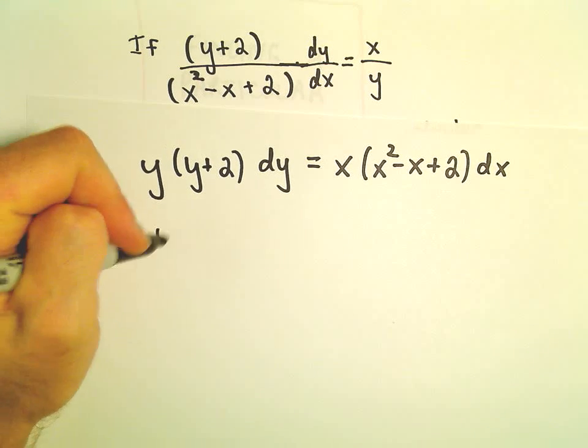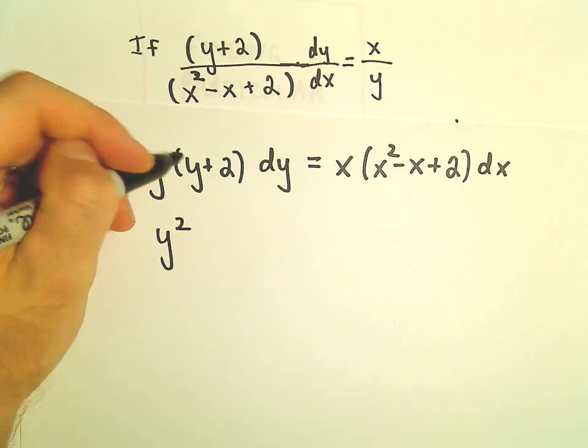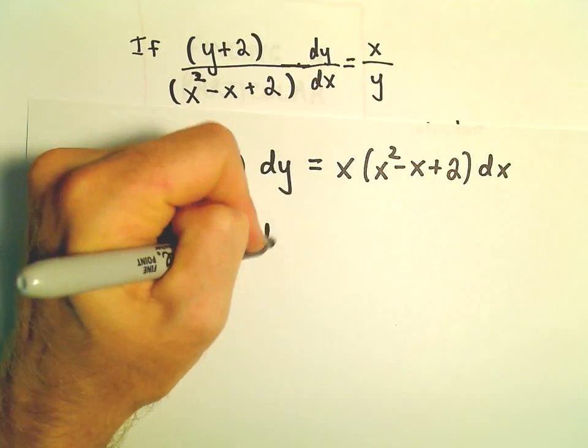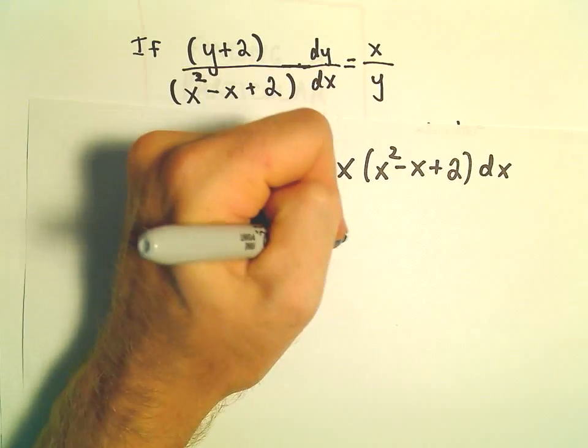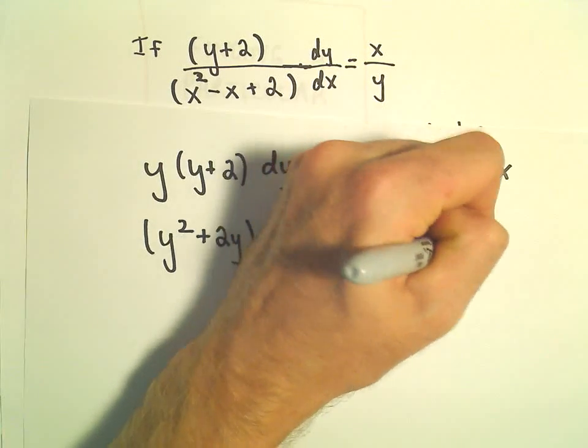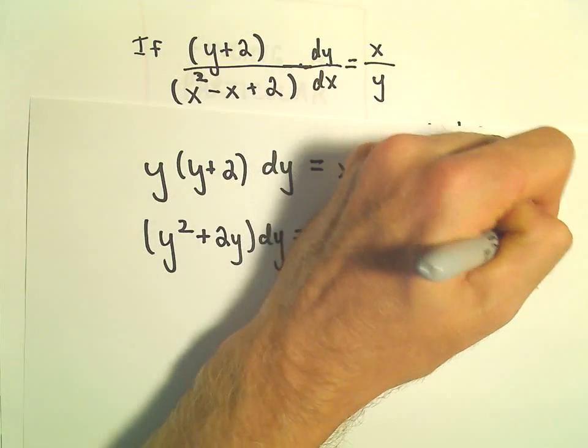Well, we're going to integrate both sides, but to do that, I'm going to distribute the y out. So, y²+2y dy. And then I'm also going to distribute the x out. So, x³-x²+2x dx.